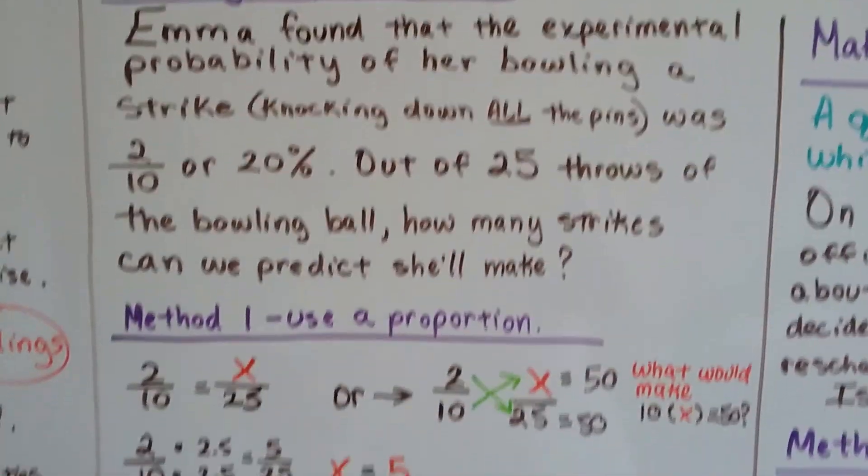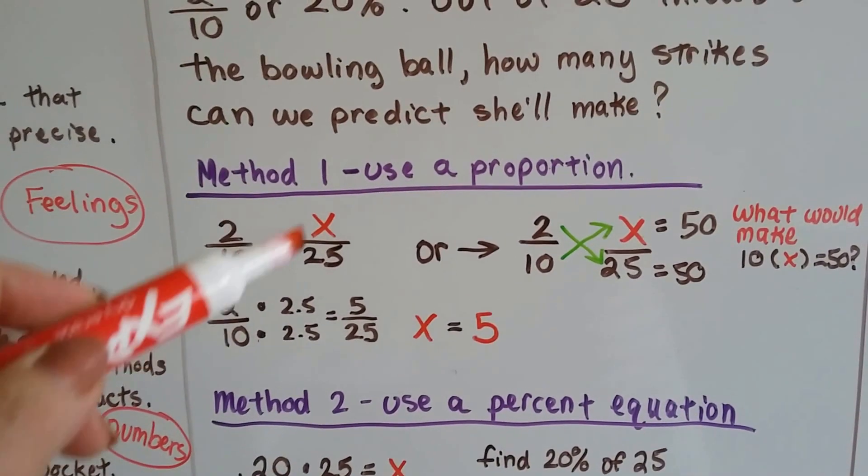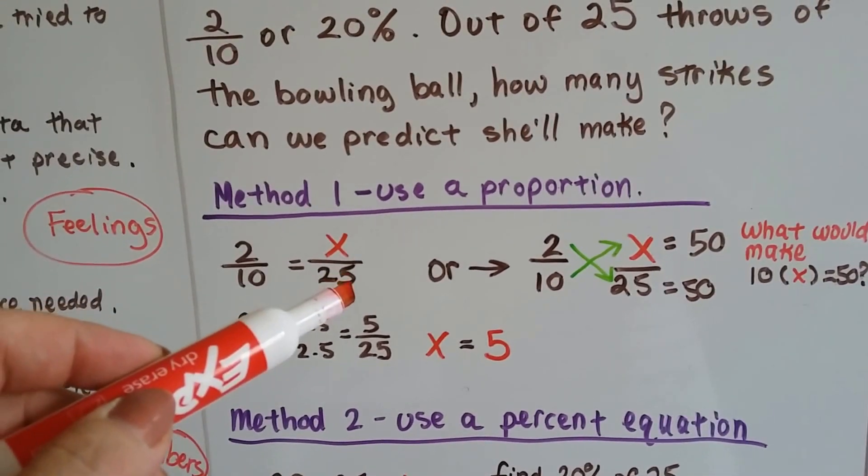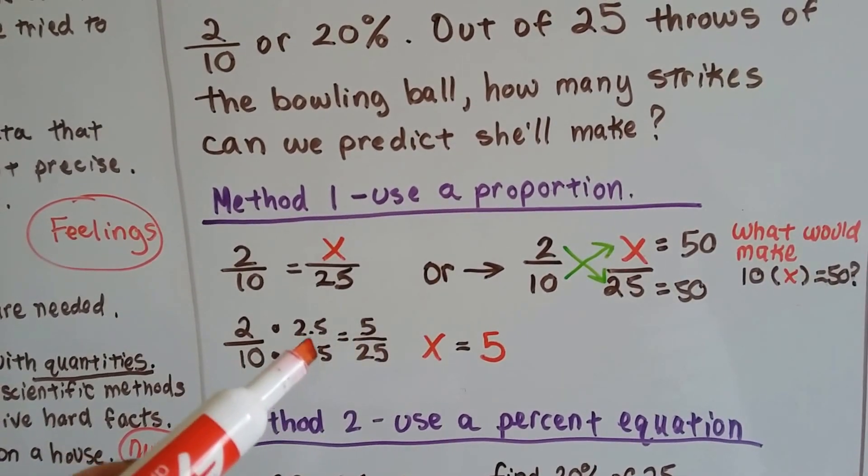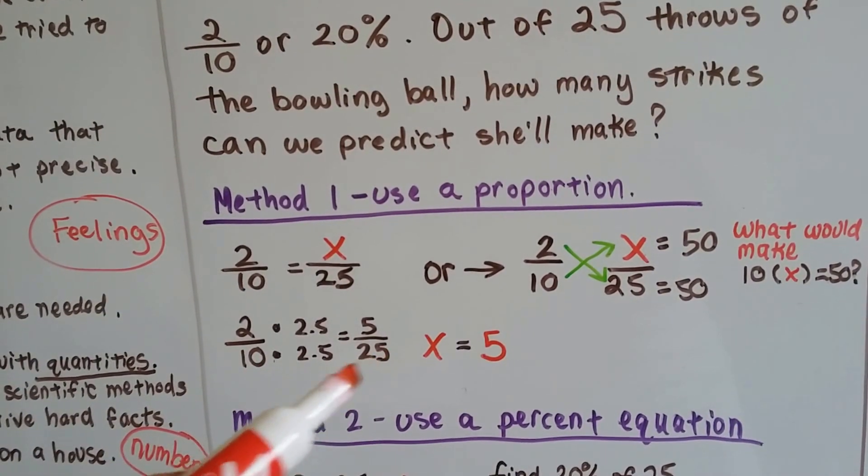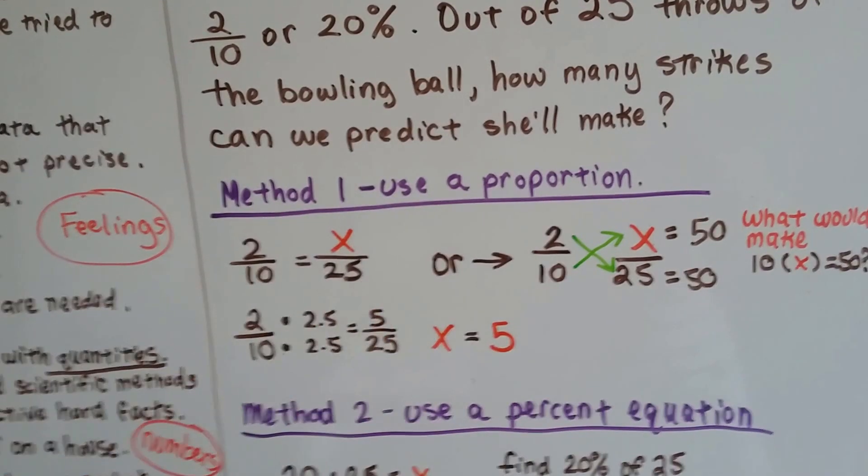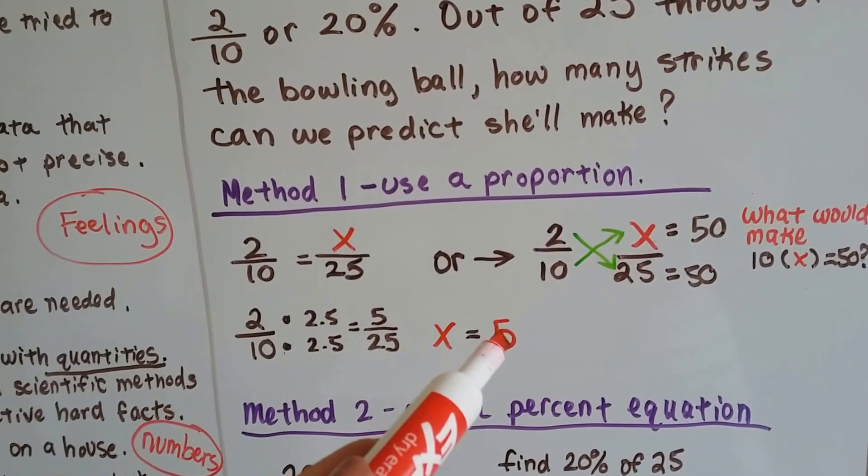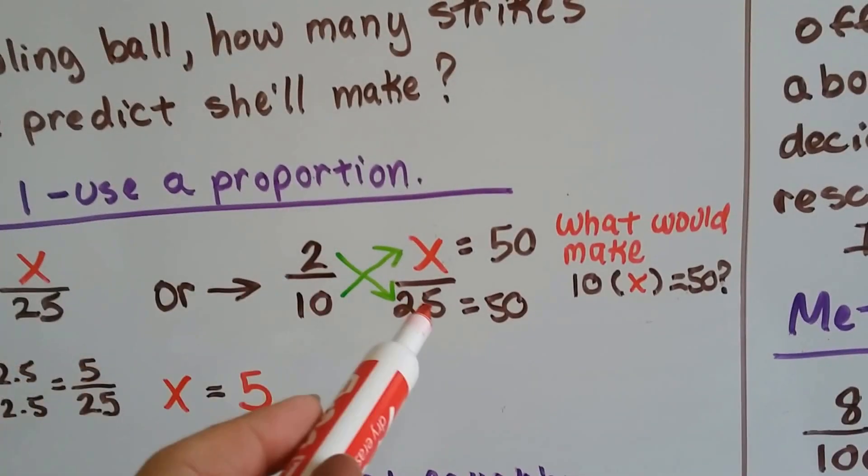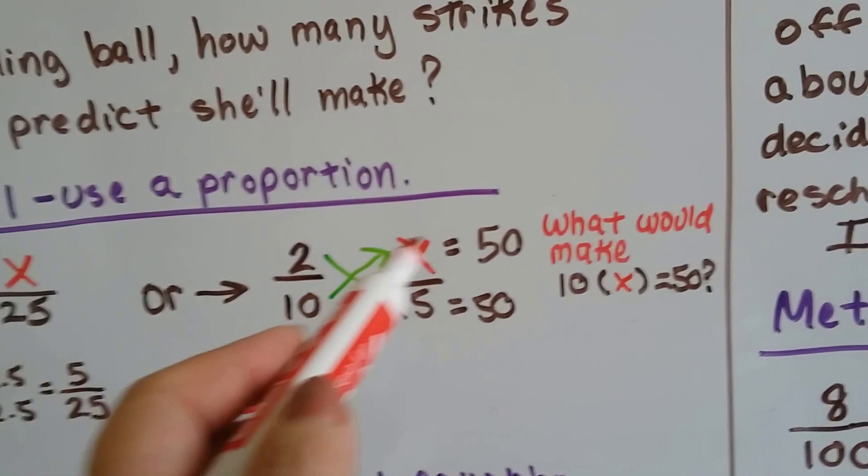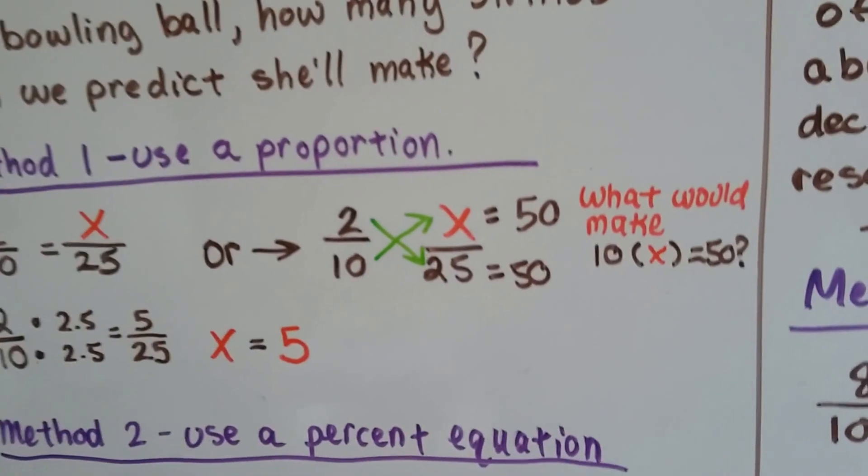So method one would be to use a proportion. 2 tenths is equal to x over 25. So we could say, what does 10 need to become 25? It needs to be multiplied by 2.5, so we multiply the numerator by 2.5, and that's 5. So x equals 5. Or, we could go this route and say, 2 times 25, and come across, is 50. So 10 times what is 50? We'd still get 5.